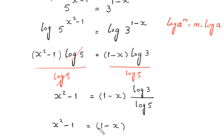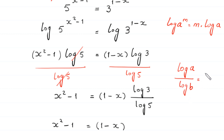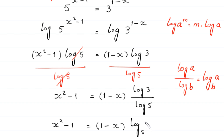By the change-of-base property, log of 3 divided by log of 5 equals log base 5 of 3. So the equation becomes x squared minus 1 equals 1 minus x times log base 5 of 3.